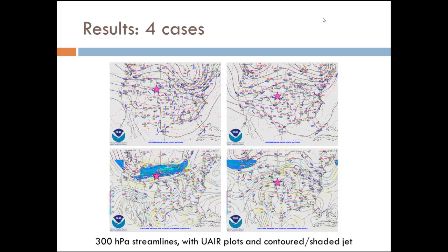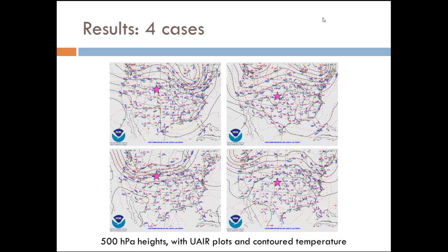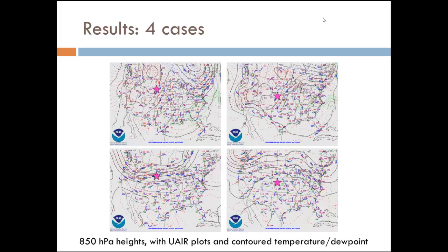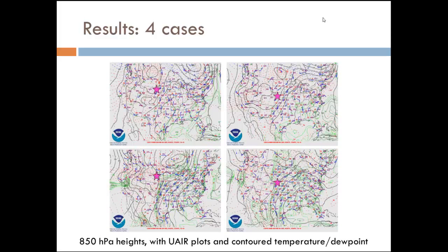Moving to 850 millibars, the only real similarity I see is generally southerly flow at the surface. With contoured temperature and dewpoint at 850, you do see that these cases are mostly out of the best moisture, typical of the high plains. But that's really the only similarity. From a synoptic perspective, we're really not seeing something that draws these cases together and would indicate we might be seeing huge errors in our CAPE forecast from the RAP.